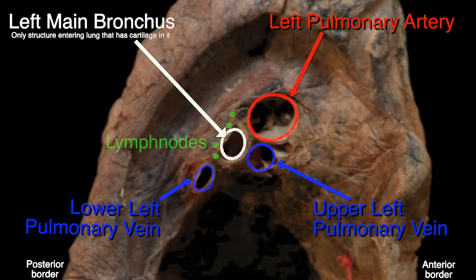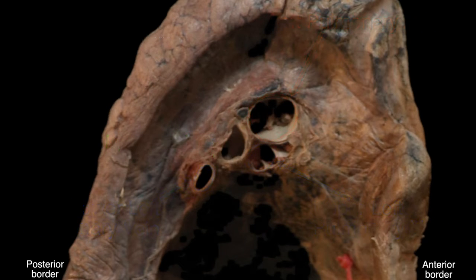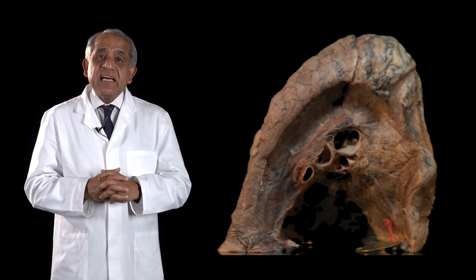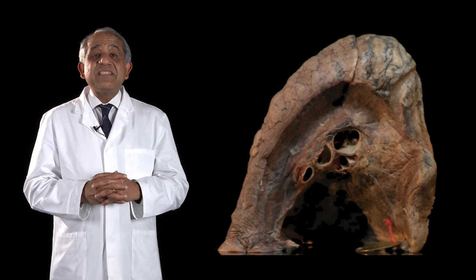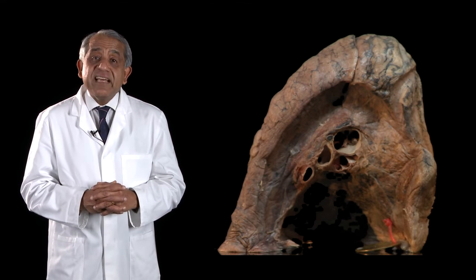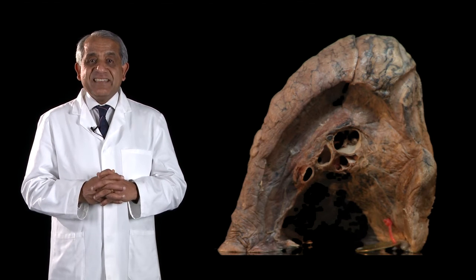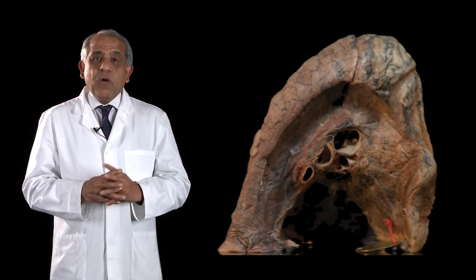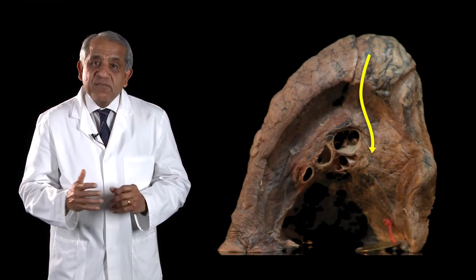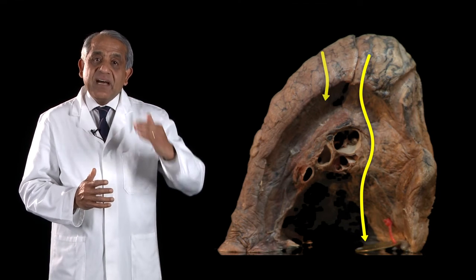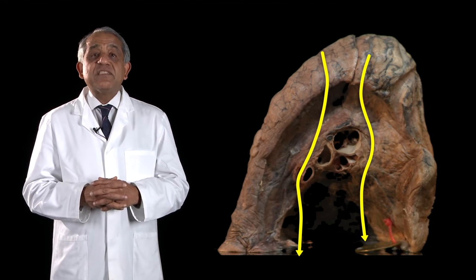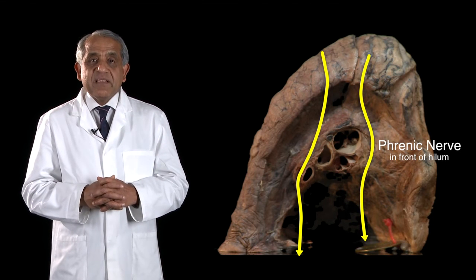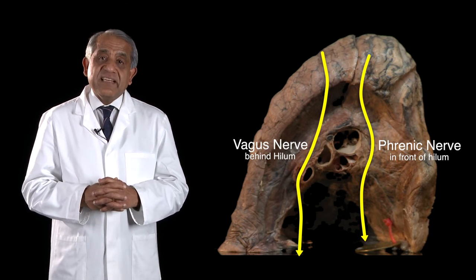There are frequently lymph nodes to be found in the hilum of the lung too. There are two important nerves that relate to the hilum of the lung on each side: the phrenic nerve and the vagus nerve. The nerve that runs in front of the hilum of the lung is the phrenic nerve, and the one that runs behind the hilum is the vagus.